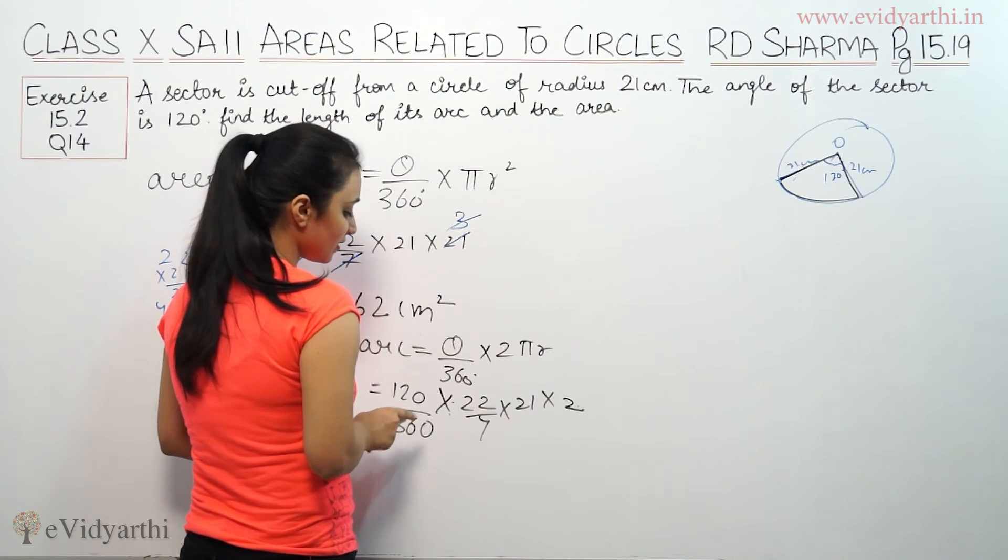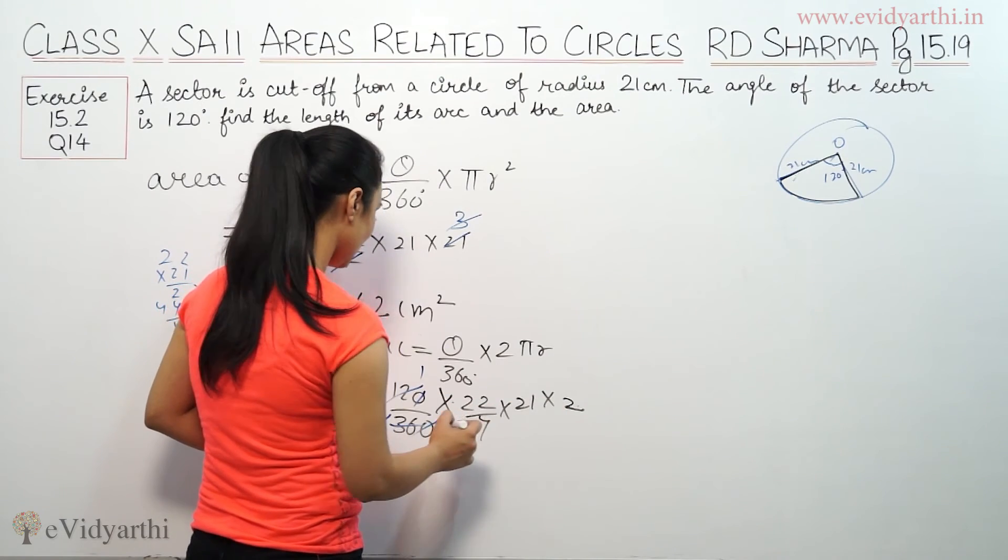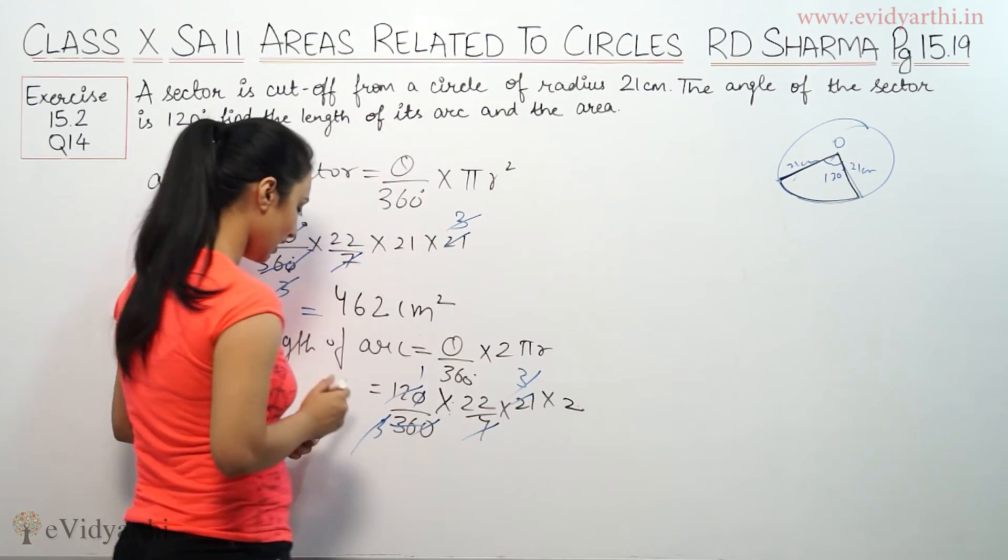So we have first, 0 is 0 cancel. 12 cancel, 12 goes. This is 7 cancel, 7 goes. 3 and 3 cut.